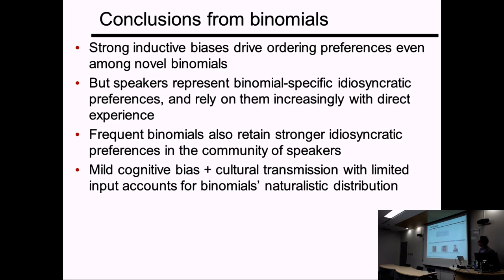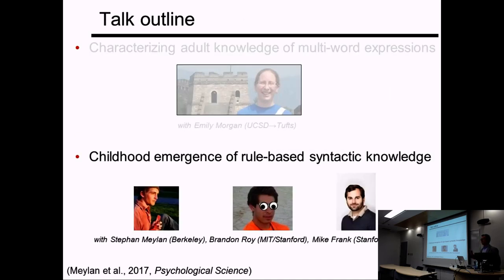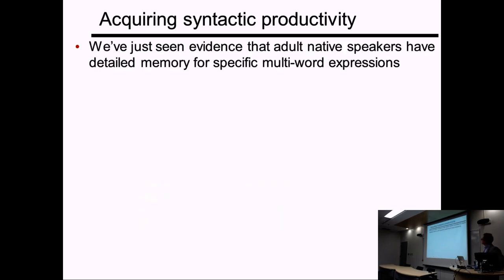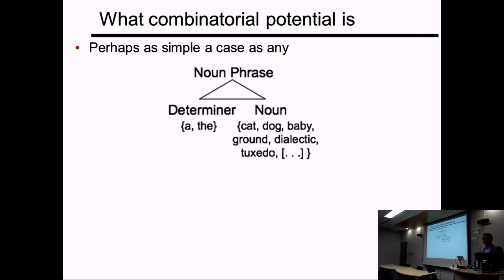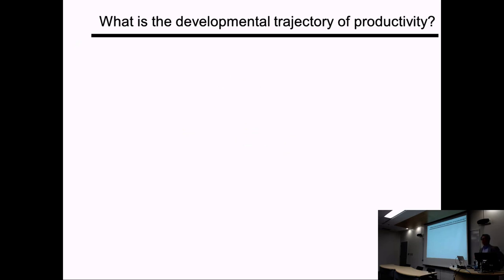In the remaining minutes I want to talk briefly about the emergence of syntactic productivity — the emergence of that generative knowledge in early childhood. Different topic, but you'll see a lot of the same themes. I'll use a different construction: noun phrases consisting of determiners and nouns. How does this productive knowledge itself emerge, and what's its relationship with idiosyncratic knowledge? An adult English speaker knows that determiners like 'a' and 'the' combine freely with nouns. What I'd like to know is how this knowledge emerges.